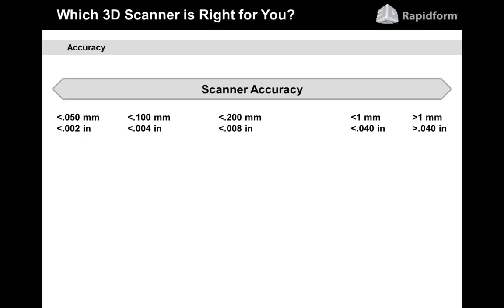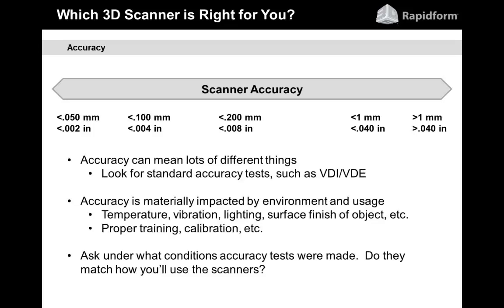Scanner accuracy is another major area to consider. There are scanners that can get down to about 50 microns or less — about 2 thousandths of an inch. Some go under 100 microns, or about 4 thousandths. Up to about 200 microns is where most smaller-object scanners top out. For mid- and long-range scanners that can scan aircraft or buildings, we're talking millimeters — either a little below a millimeter or up to 3, 4, or 5 millimeters typically.